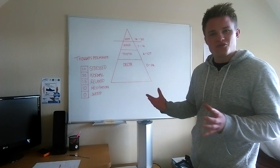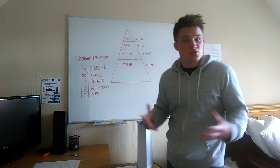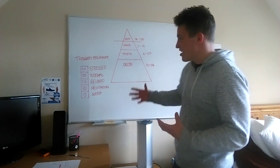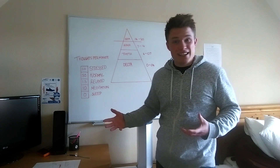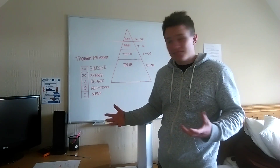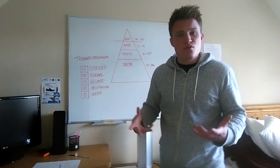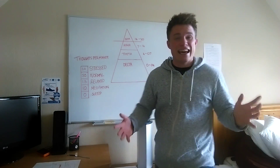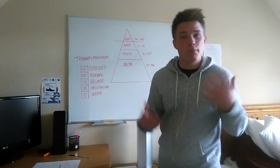Research suggests that in terms of how many thoughts we have per minute: when we're stressed, we have about 60 thoughts per minute; in a normal regular state, it's around 30; when we're relaxed and moving toward theta, it's about 15; in meditation it could be anywhere between zero and ten; and in sleep it's around zero. Really, not that many thoughts are happening.